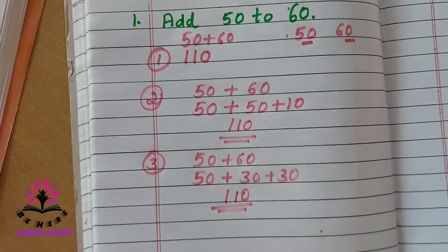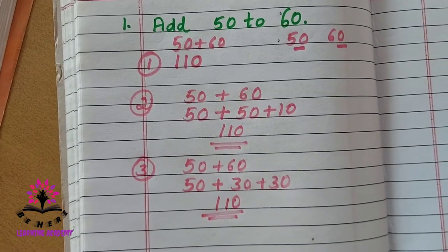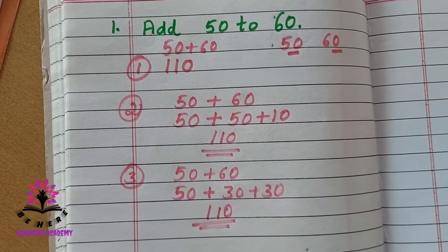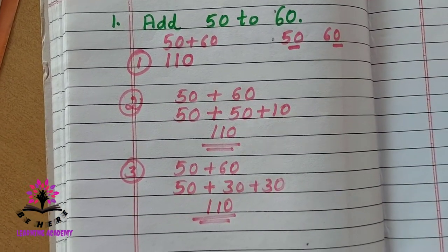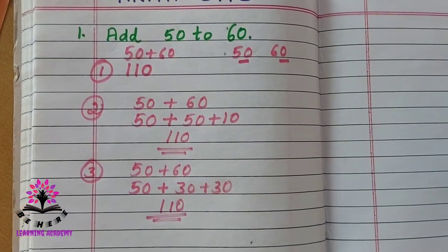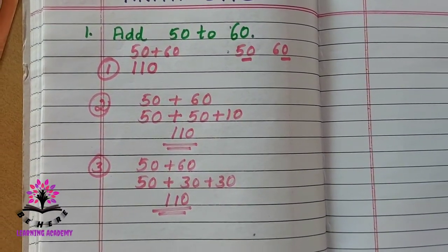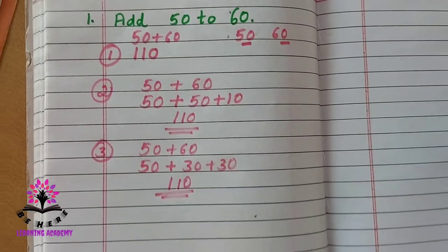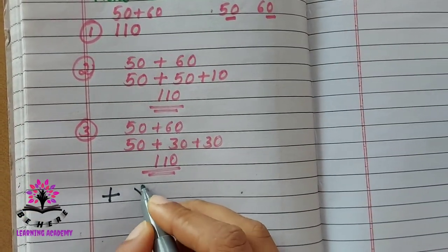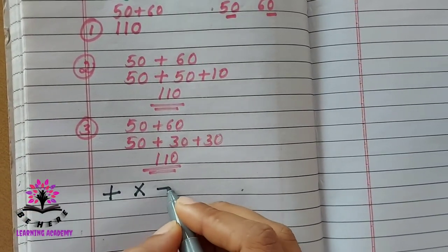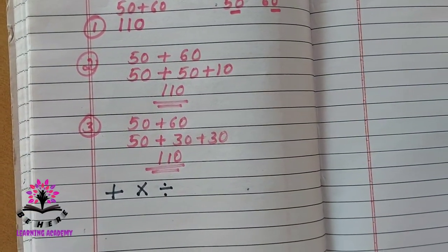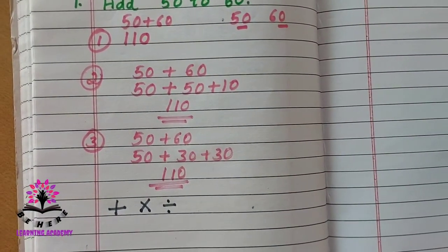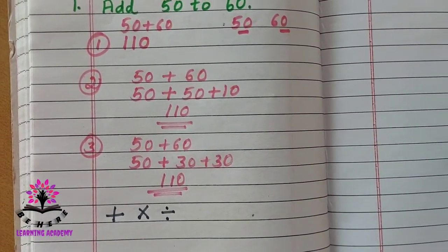These are the three methods to add the given numbers mentally. Mental mathematics or mental arithmetic is used in addition, multiplication, and division. Can you think of more situations where we can use this?